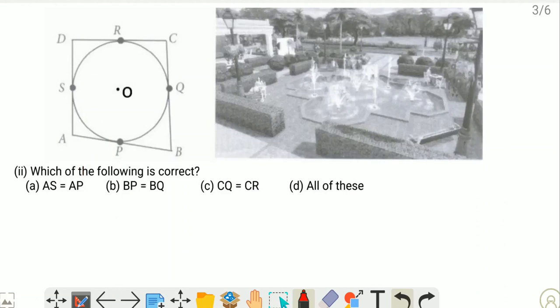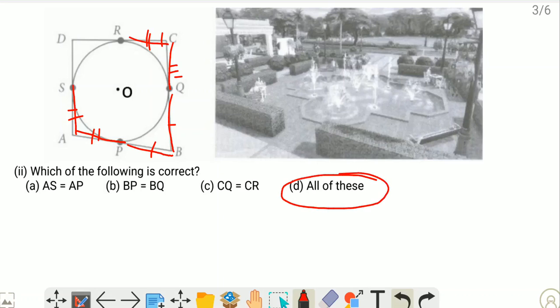For the second question: which of the following is correct? AS equals AP — we know that tangents drawn from an external point to the circle are equal, so these two are equal. Similarly, BP equals BQ, and CQ equals CR. All three options are correct, so option D is the right one.